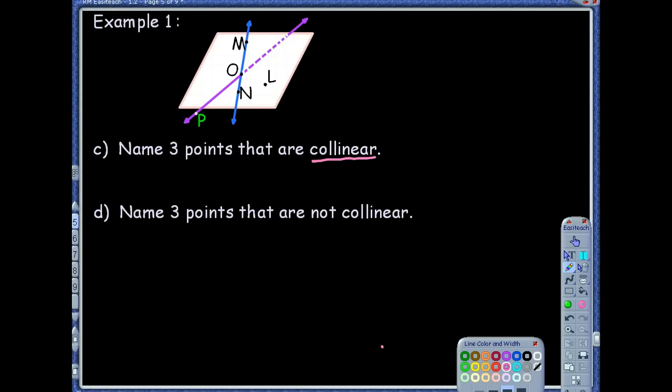So collinear meaning, we're talking about three points, points that are on the same line. So I got to look at that picture and I got to find three points that are on the same line. So I see M, O, and N are all on the same line there.